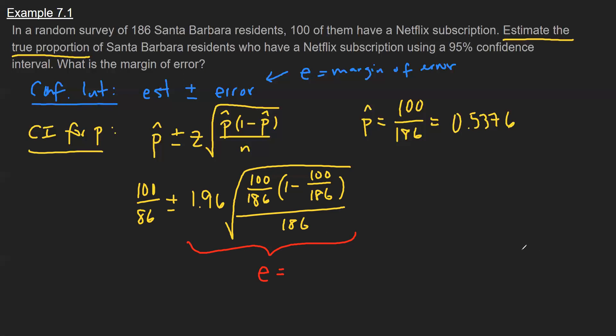So if I run through this calculation, margin of error is about 0.0717, which is to say that when we're estimating this fraction, we're potentially off by 7%.